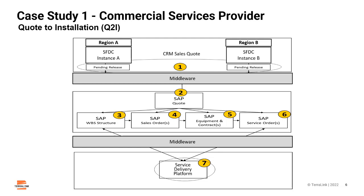The service orders, with the customer locations, product equipment information, configurations, and other key information, are sent to installation teams — who are often contractors — via a service delivery platform. The service delivery platform guides installers to complete the installation of the security and safety solutions and setting up of the monitoring services. That in a few sentences describes the quote-to-installation process basics.